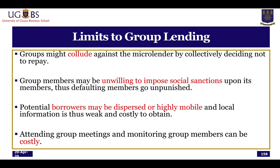There are limits, however, to group lending. Group members can collude, deciding together that they will not pay, causing the group to collapse. In some cases, members may be unwilling to impose social sanctions on defaulting members, leaving them unpunished. There are also cases where potential borrowers are so dispersed and highly mobile that local information is weak and costly to maintain. Additionally, attending group meetings and monitoring group members can be costly in terms of both time and travel to the appropriate location.